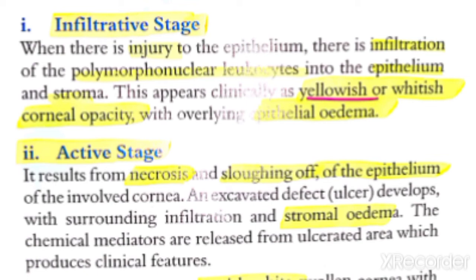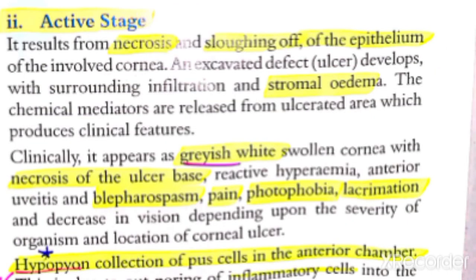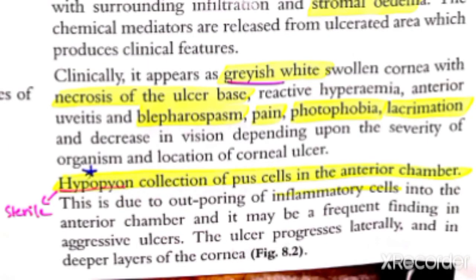In the active stage, three things to remember: first, an ulcer forms with necrosis - when the ulcer has formed and the epithelium above is damaged; second, the shape of the ulcer is sausage-shaped; and third, the color appears grayish-white. Hypopion also starts to appear at this stage because white cells have been fighting against bacteria - remember that hypopion is sterile pus.